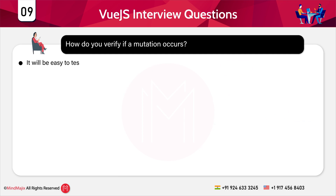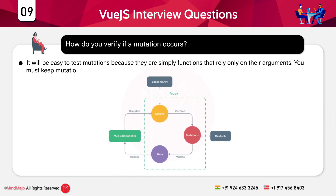The next question is: how do you verify if a mutation has occurred? It is easy to test mutations because they are simply functions that rely only on their arguments. You must keep mutations contained within your store. Mutations should also be exported as a named export apart from the default export.